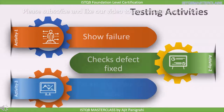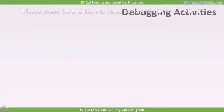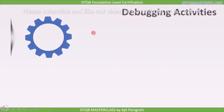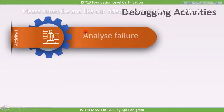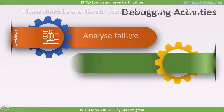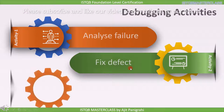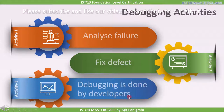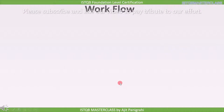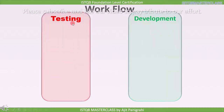Testing is done by testers. Now let's have a look into the debugging activities. The most important activity of debugging is to analyze failure. Once the failure is analyzed and the root cause is found, the next activity is to fix the defect. Debugging is done by developers.